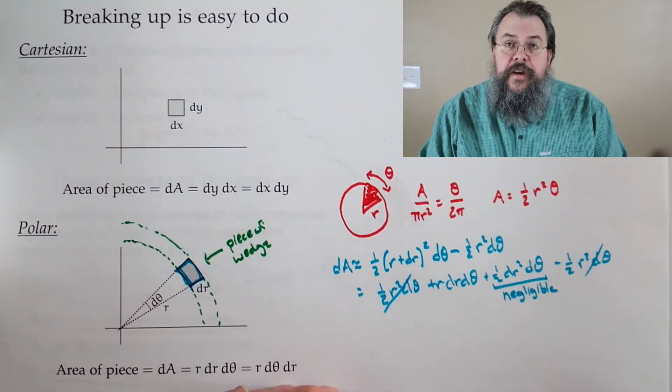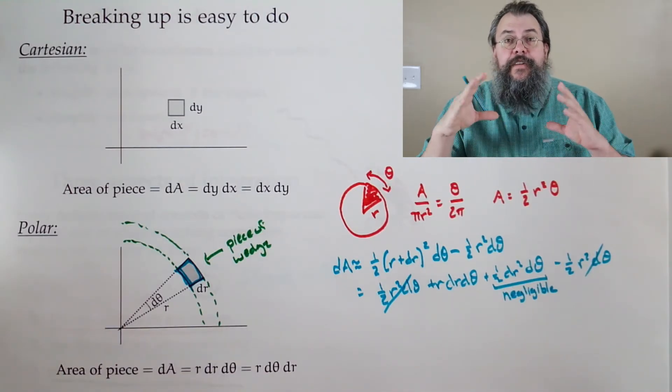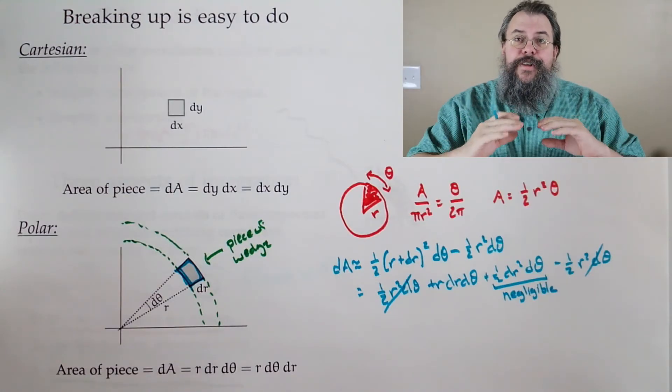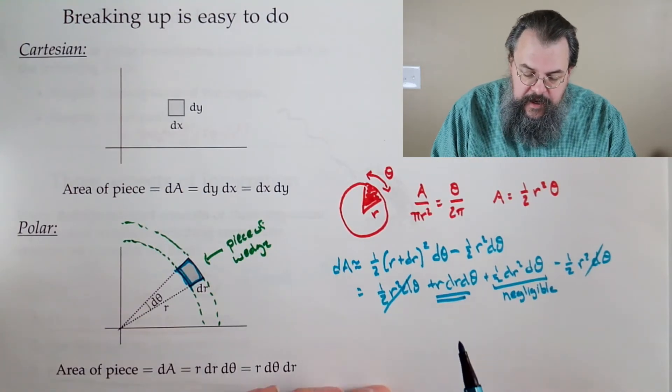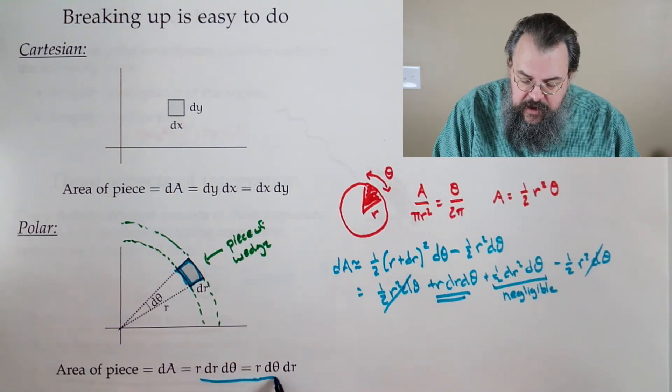And therefore we come up with the idea, aha, that is r dr d theta or r d theta dr. Now there's sort of an intuitive check because what should area involve? If I'm thinking about area, there should be two lengths involved.